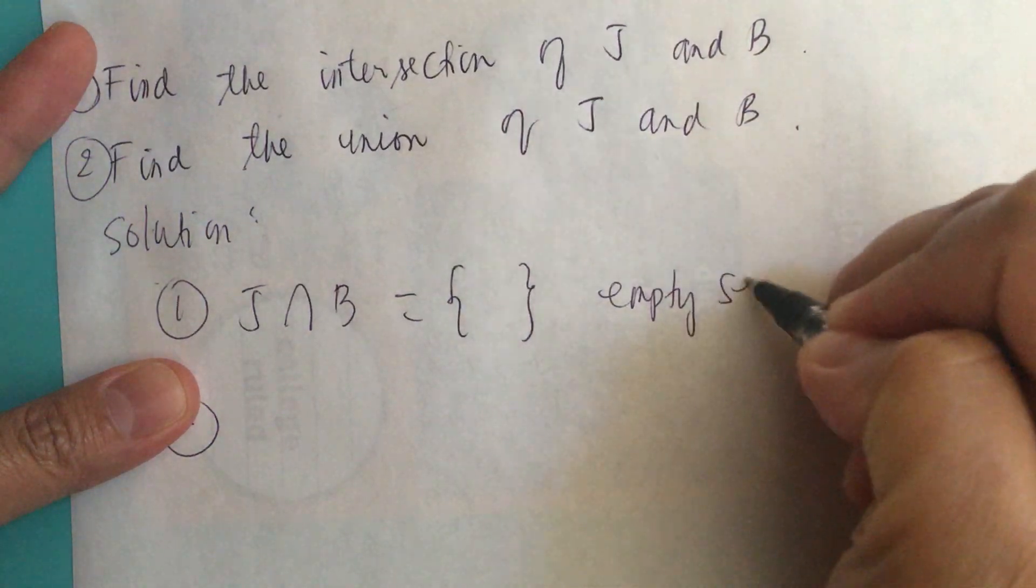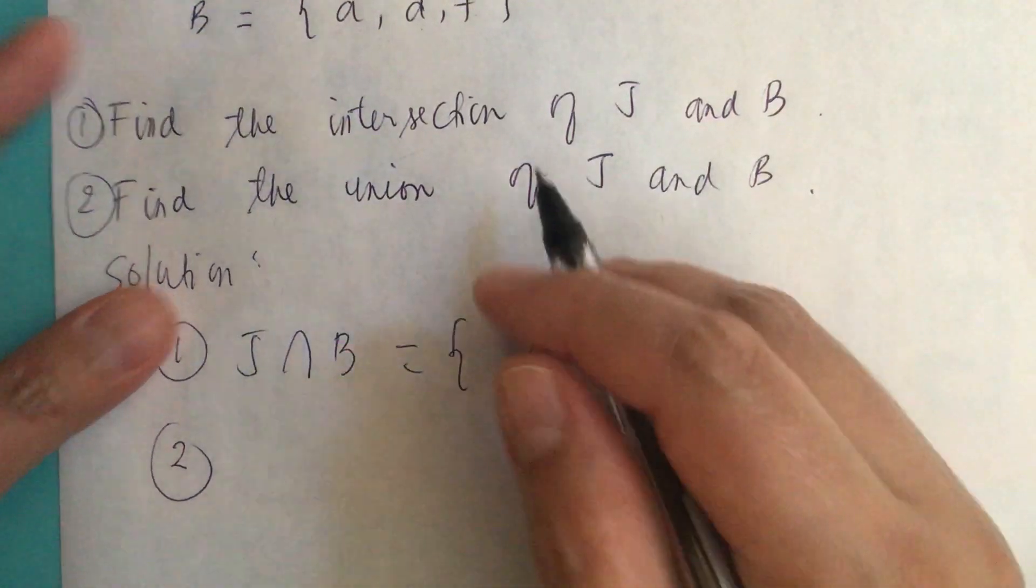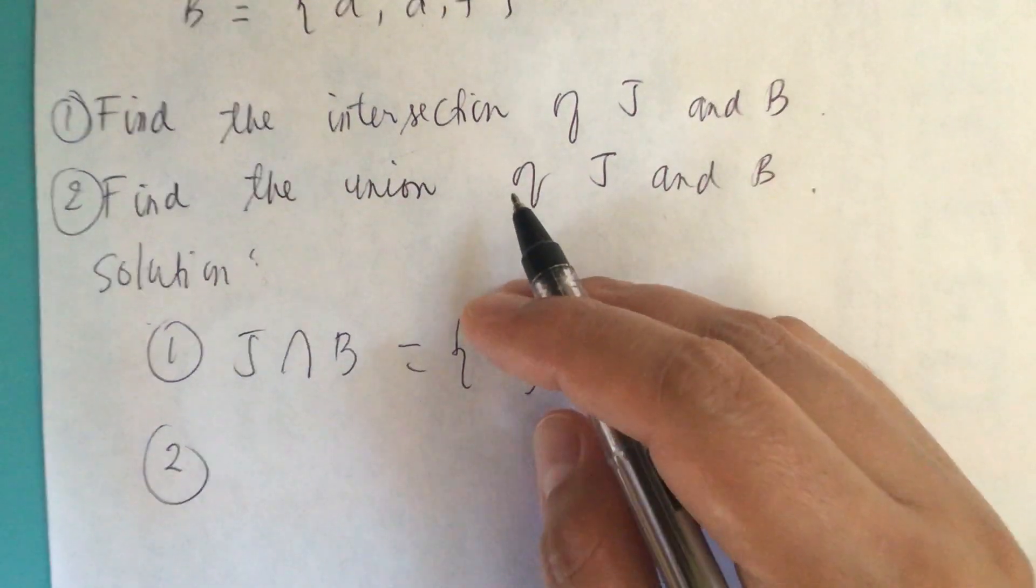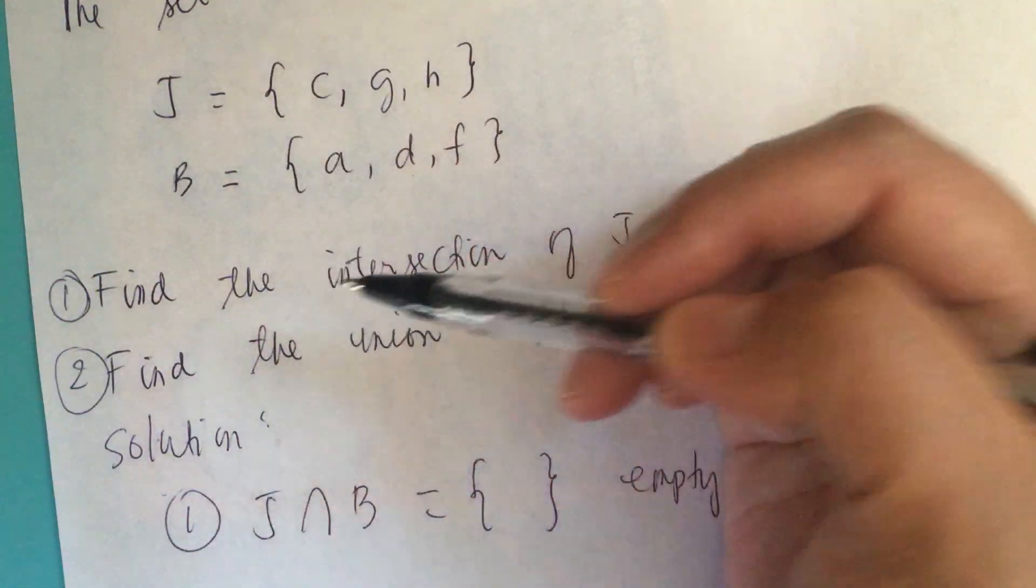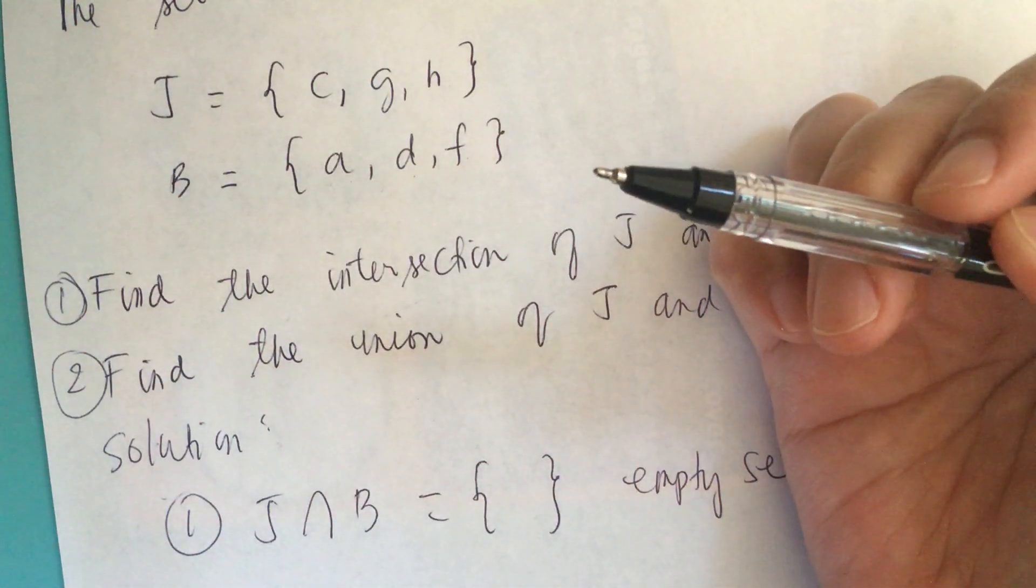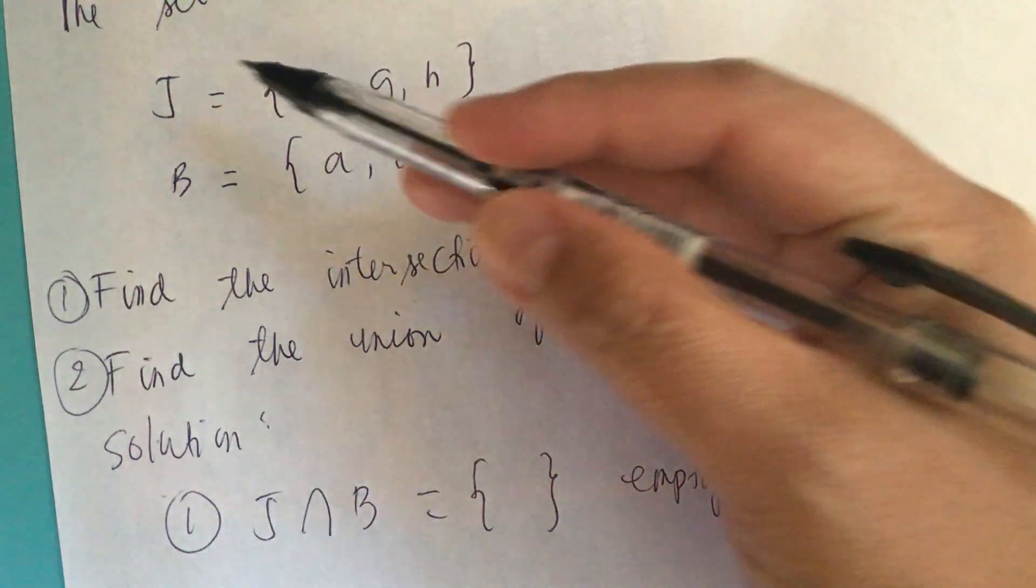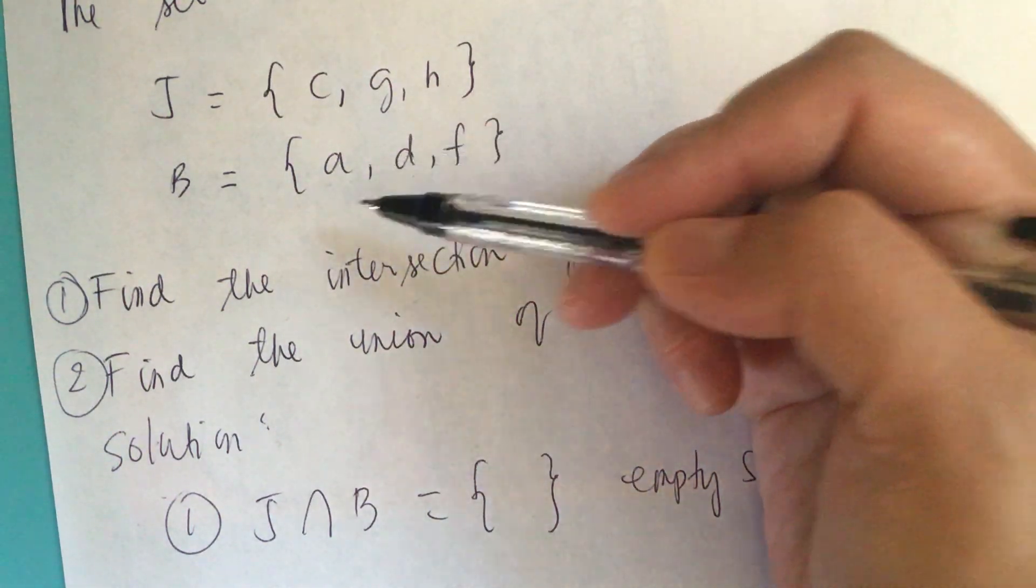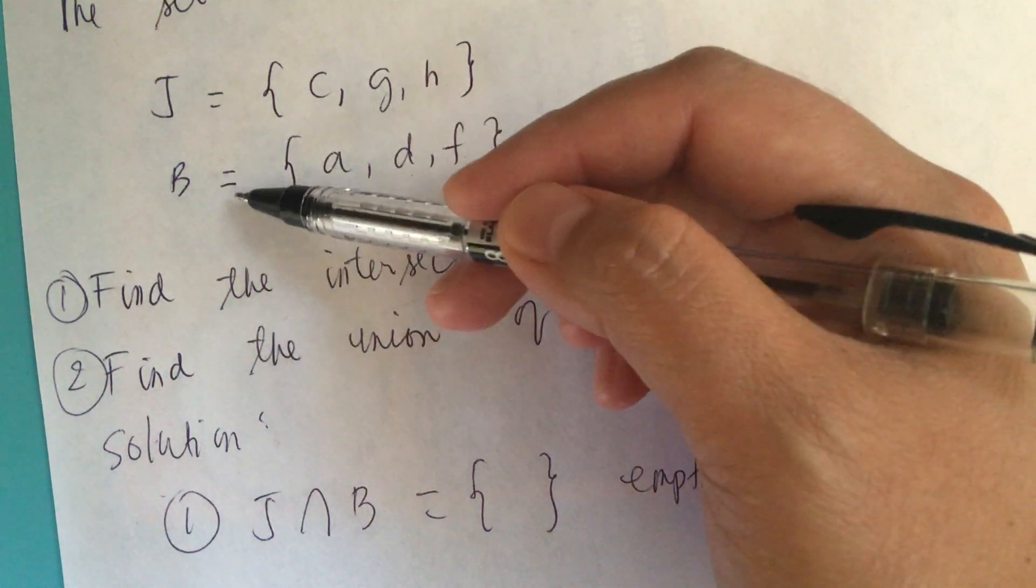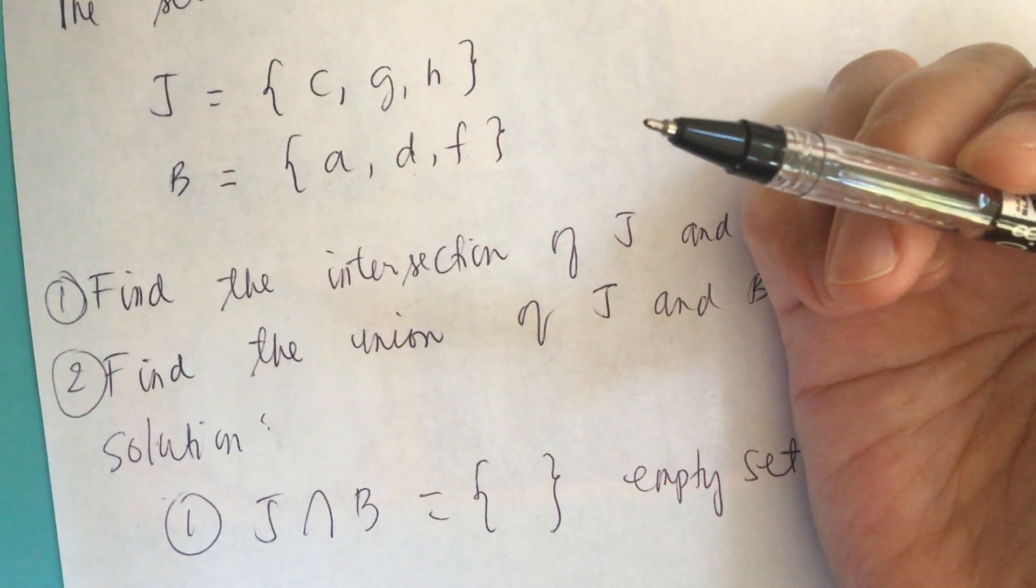For number two, find the union of J and B. Given two sets J and B, the union is the set that contains elements or objects that belong to either J or B or to both. Basically, we find J union B by putting all the elements of J and B together.